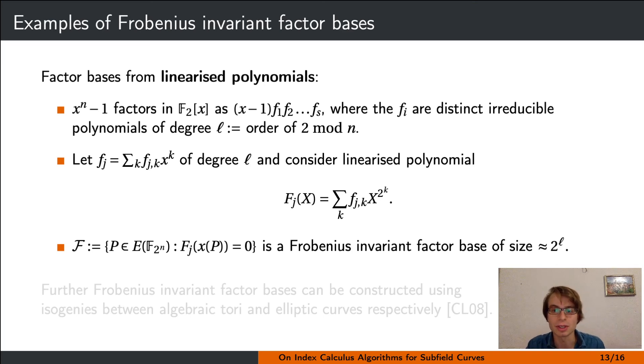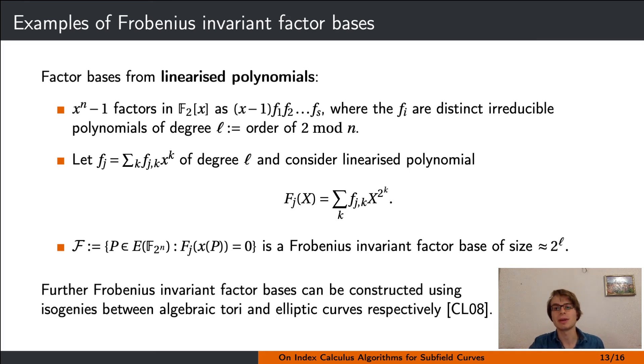However, in general, if the order is fairly large, we do not have good enough fine control over the size of the factor base for this method to be suitable. Further Frobenius invariant factor bases can be constructed using isogenies between algebraic tori and elliptic curves. These constructions are based on work previously done by Granger and Vercauteren on Galois invariant smoothness bases.